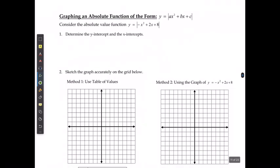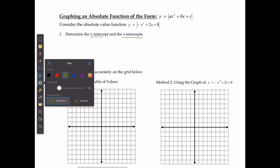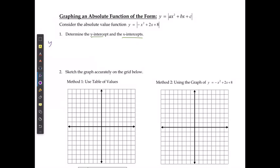If I am graphing an absolute value function in general form — the absolute value of ax squared plus bx plus c — then the first thing I'm going to do is solve for the x and y intercepts, just like I usually would. So in this case, the y-intercept is going to be y equals the absolute value of negative 0 squared plus 2 times 0 plus 8.